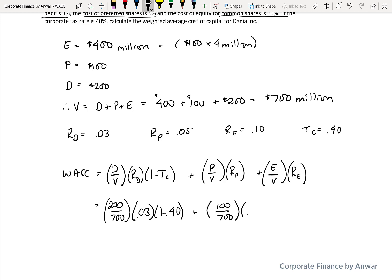plus $100 million in preferred divided by the value of $700 million times the preferred cost of 5%. And then $400 million in common equity divided by the value of $700 million times the 10% that we get for the cost of common equity.